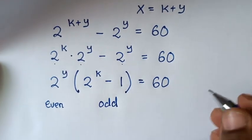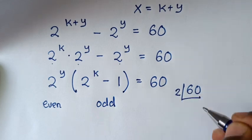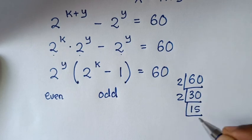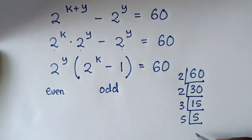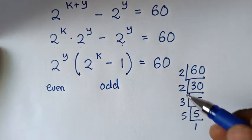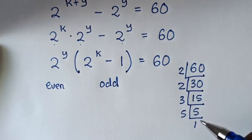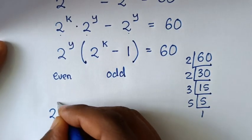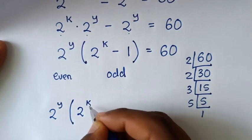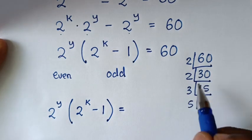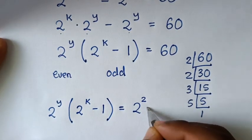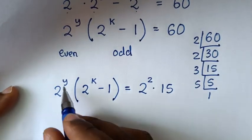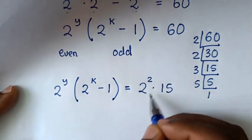Let's find the factors of 60. From 60, it is divisible by 2 giving 30, then by 2 again giving 15, then by 3 giving 5, then by 5 giving 1. So the even part is 2 times 2, which is 2 squared, and the odd part is 3 times 5, which is 15. Therefore 2 to the power of y times bracket 2 to the power of k minus 1 equals 2 squared times 15.